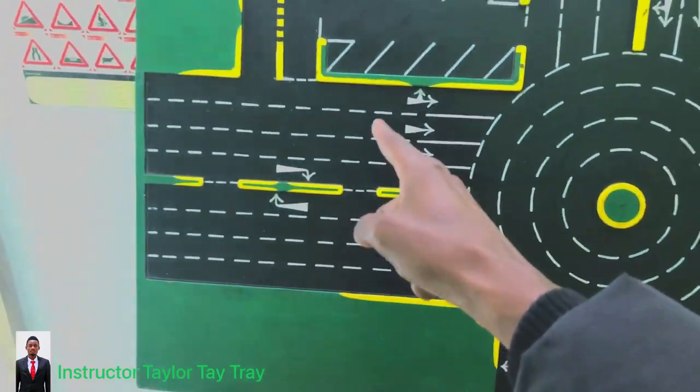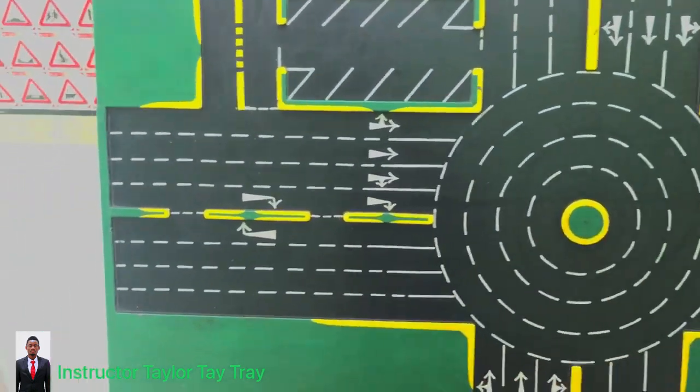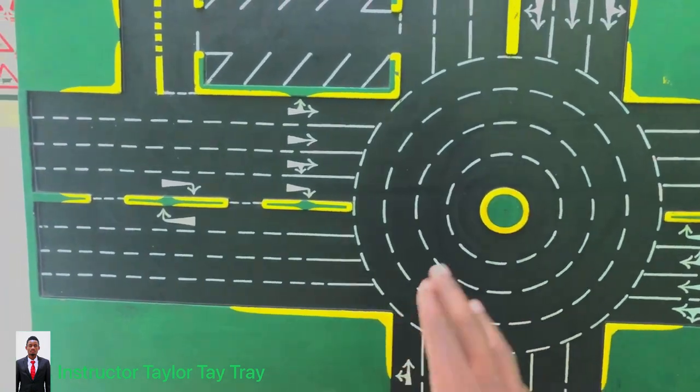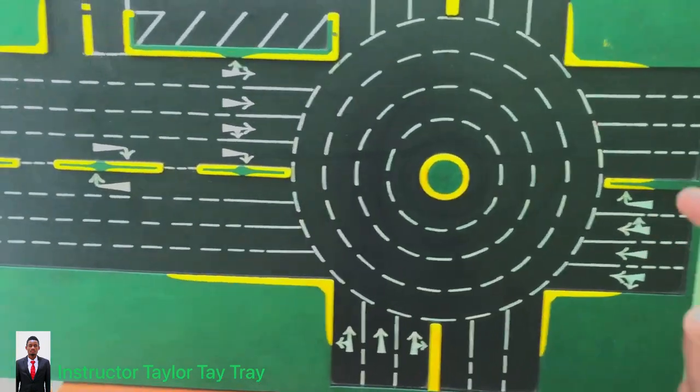The other rule is to drive in a clockwise direction. Drive in a clockwise direction. If you're keeping left, drive in a clockwise direction. If you were keeping right, like in some countries, you would drive in an anti-clockwise direction. So always drive in a clockwise direction.